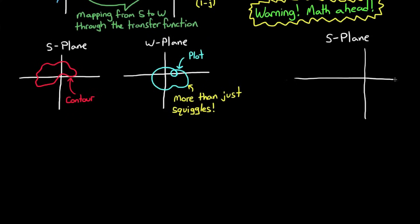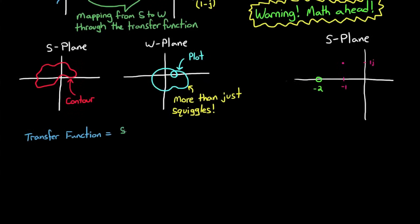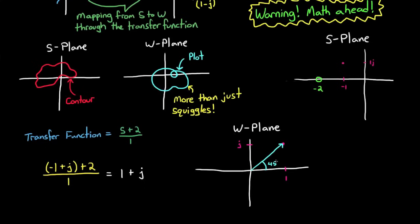I'll simplify our transfer function just a bit for this example down to a single zero at s equals minus 2. And I'll map the point s equals minus 1 plus j over to the w-plane using our transfer function s plus 2 over 1. And we find it to be 1 plus j. Now here's the really interesting part. The phasor of the point in the w-plane is exactly the same as the phasor between the zero and the point we chose in the s-plane.